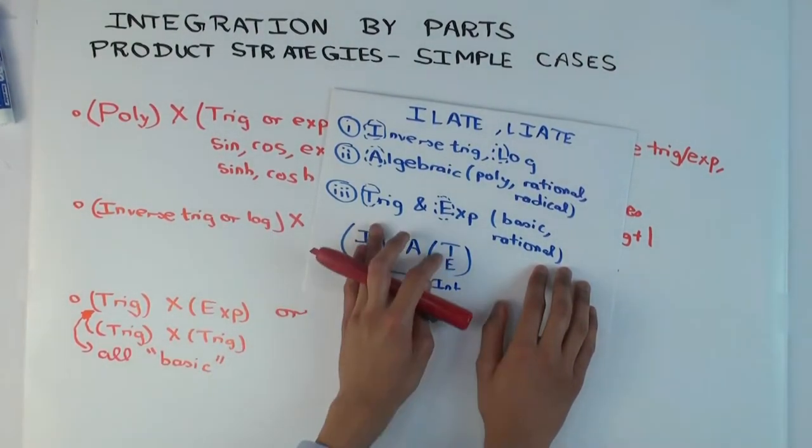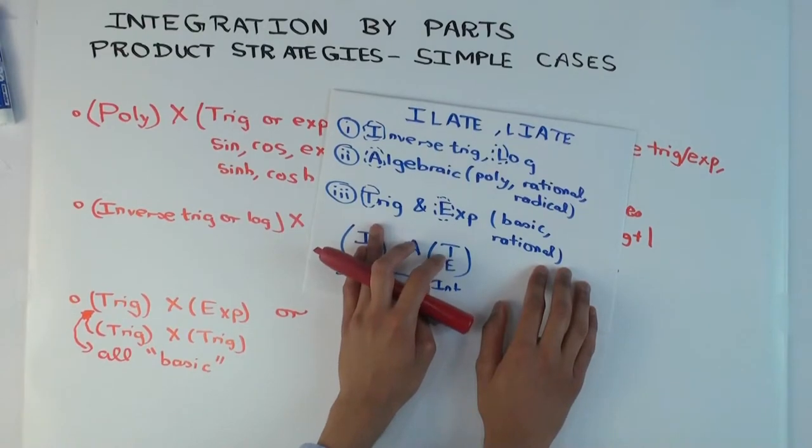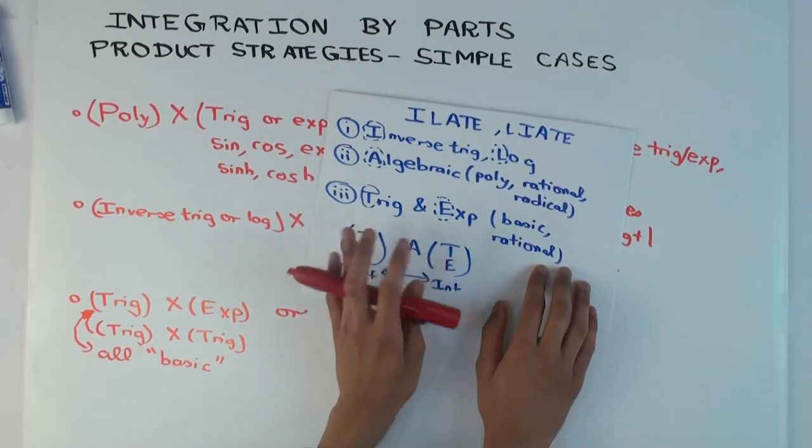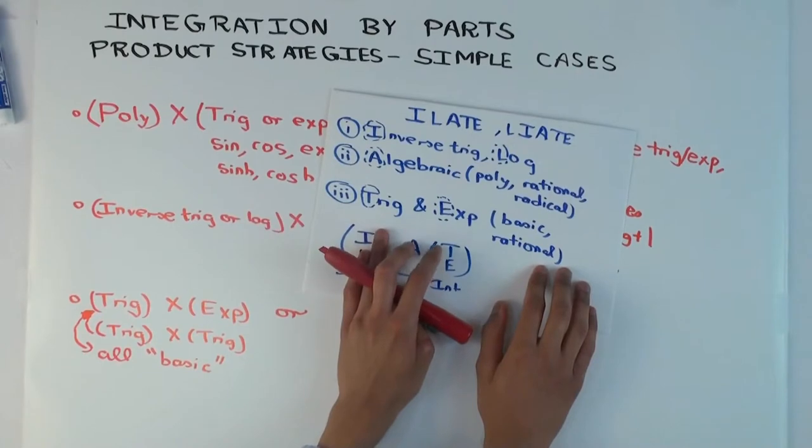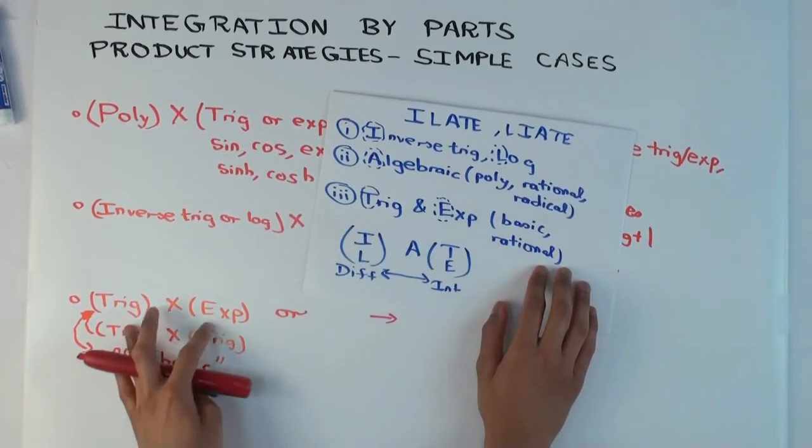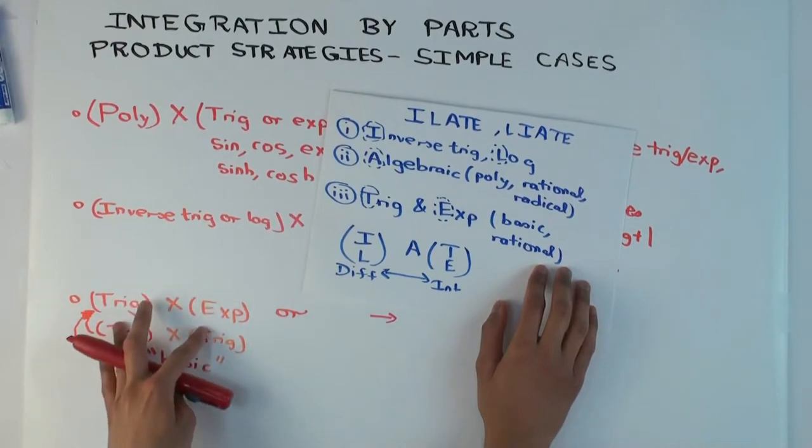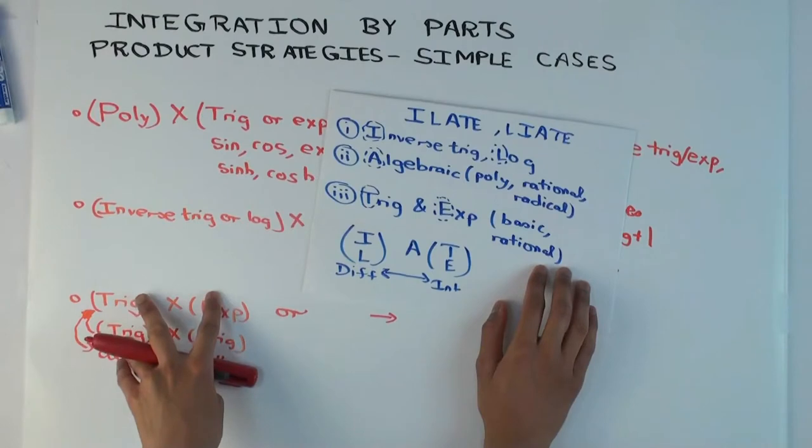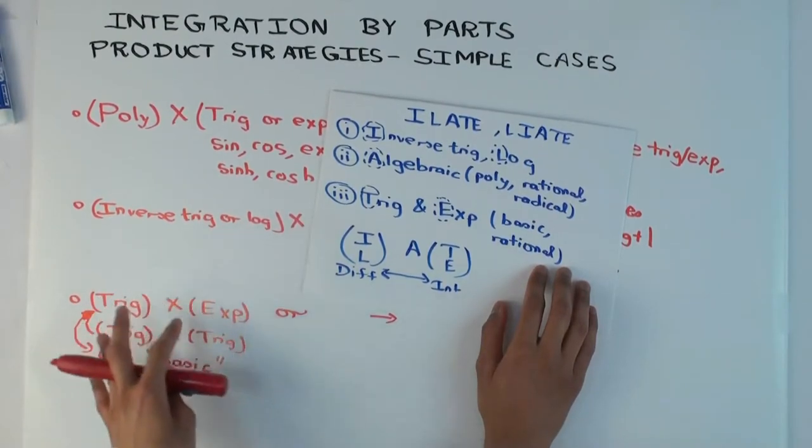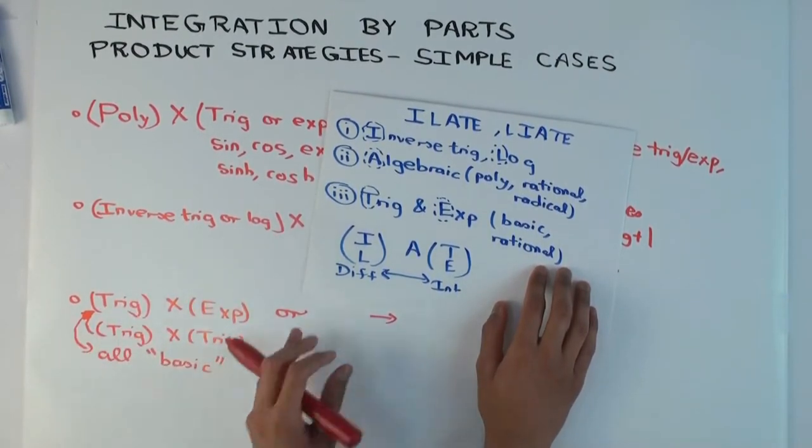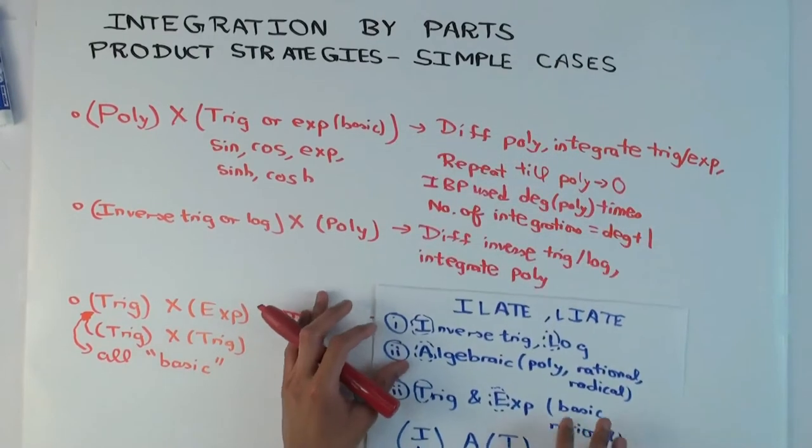So you can do either, you can choose anything, but you should be consistent to avoid the circular trap, as we'll see when you actually do an example. But the point is, if you actually try to use integration by parts, the thing doesn't actually get simpler, because the trigonometric will differentiate to something similar, the exponential will integrate to something similar, and you'll never quite get out of that.